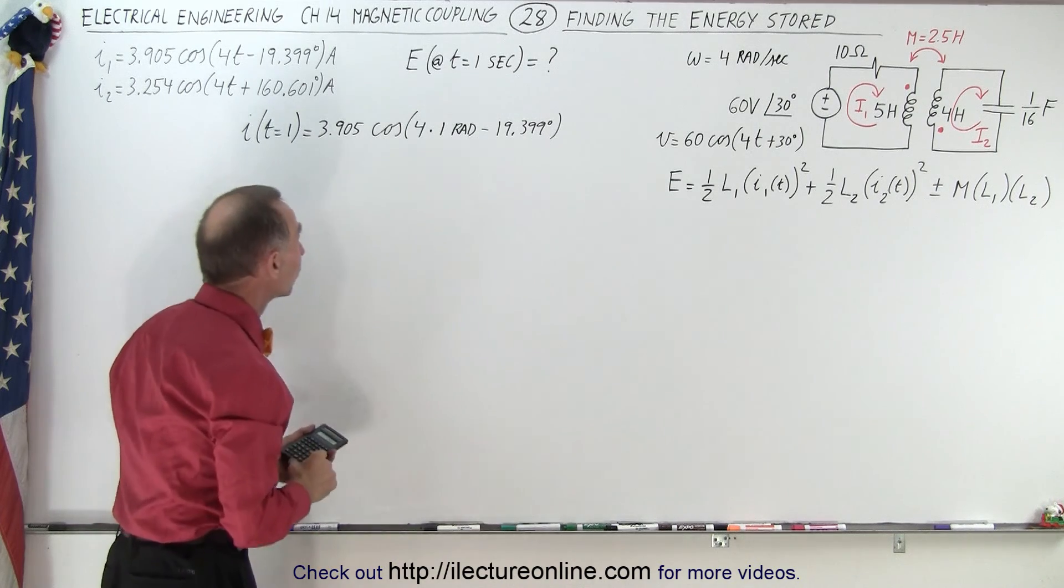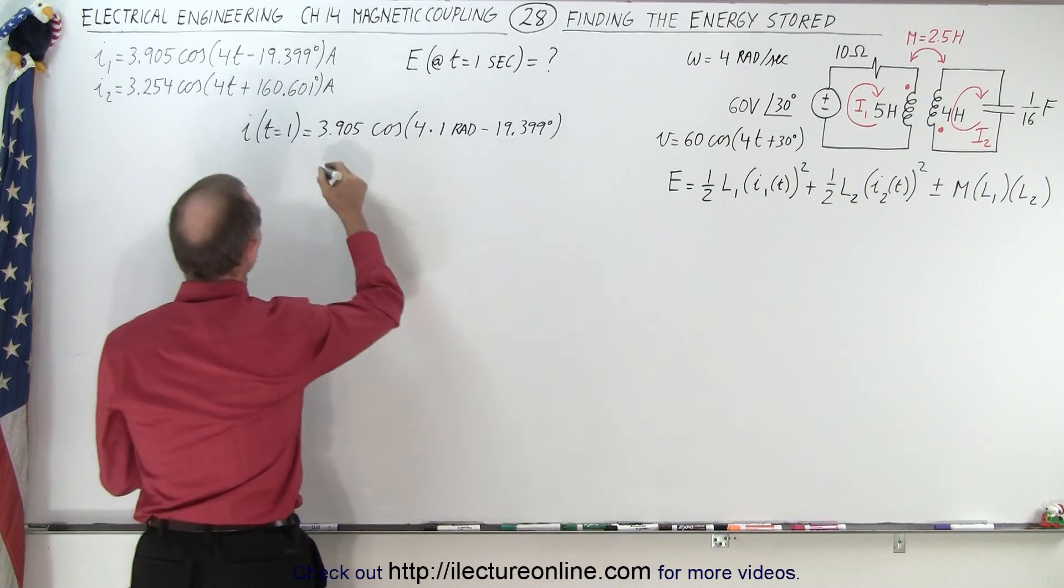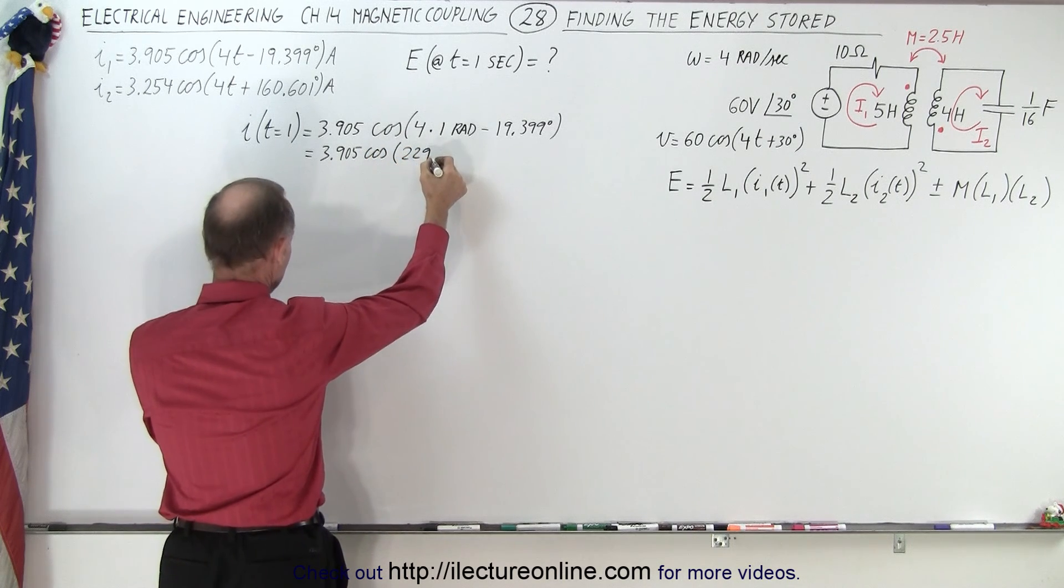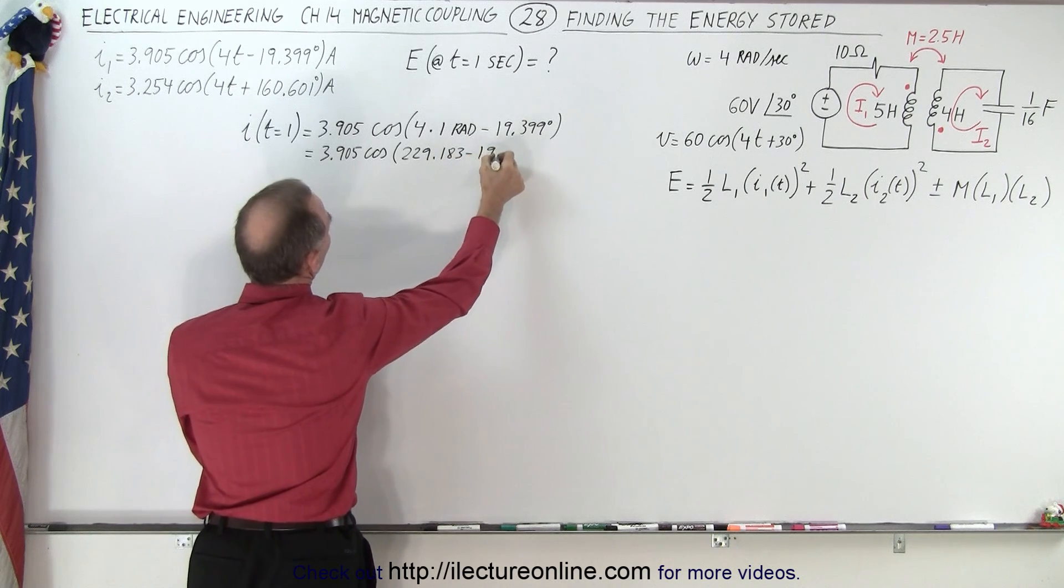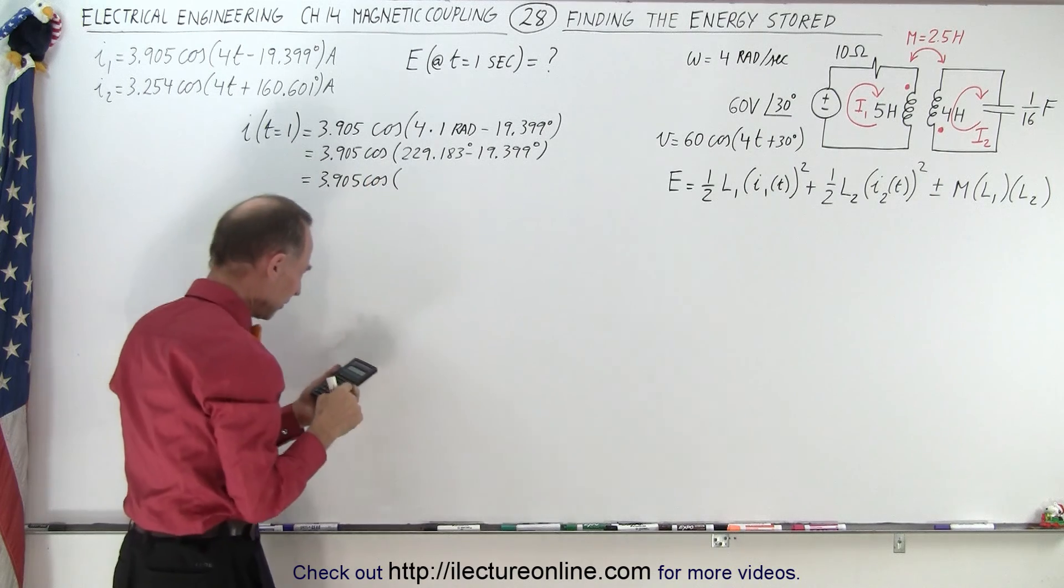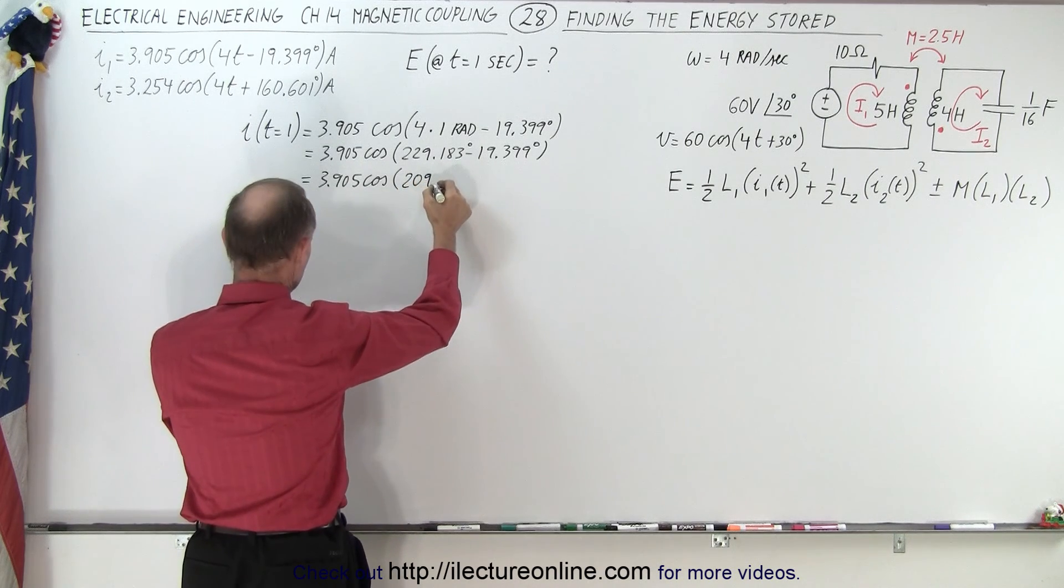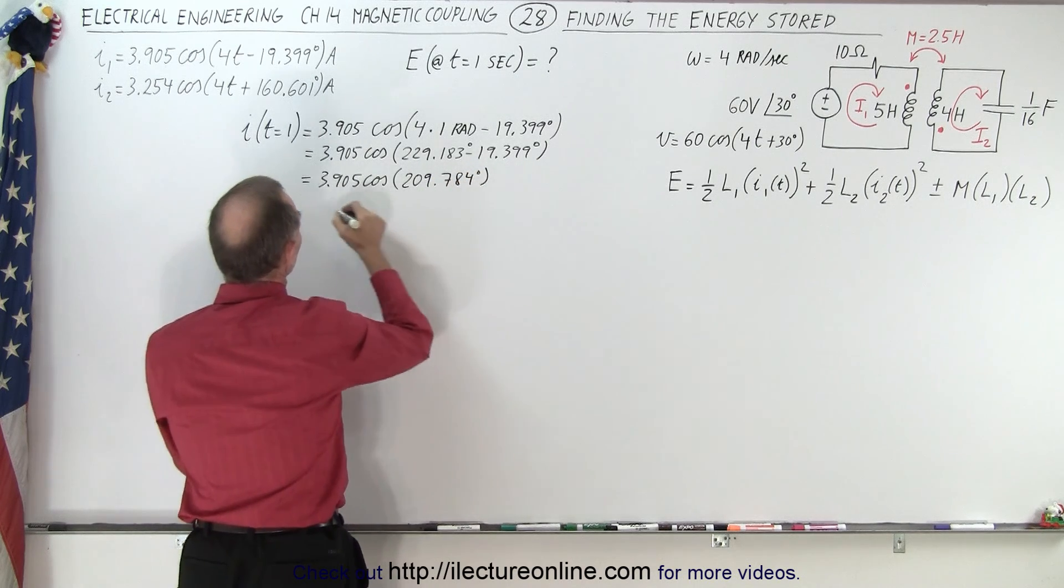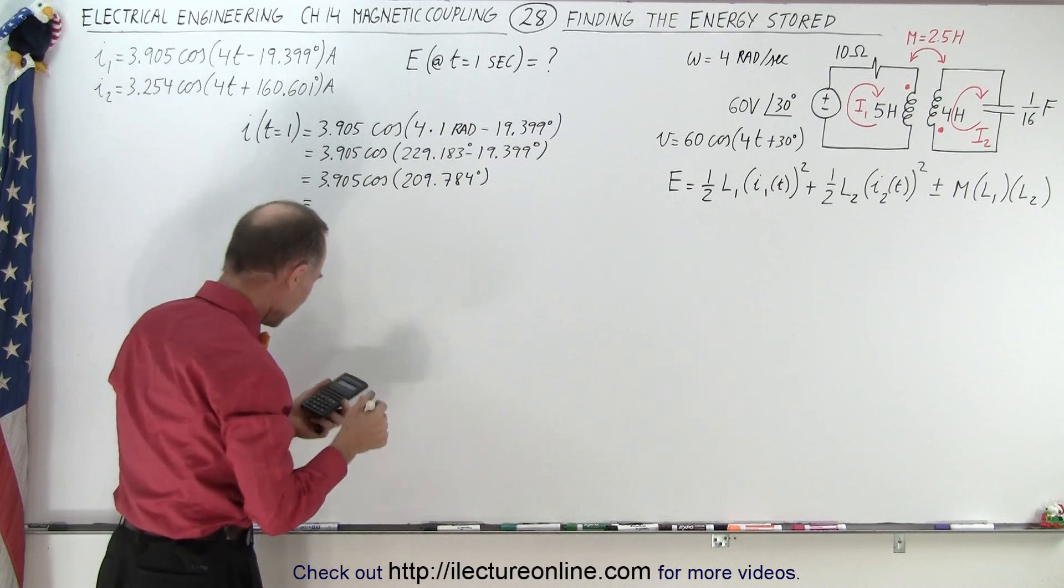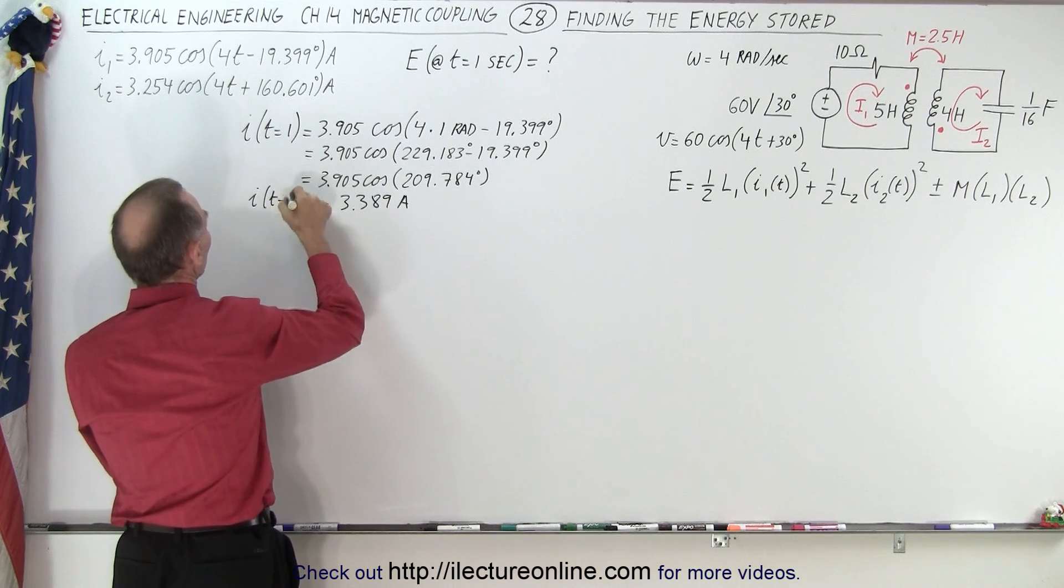First we have to convert radians to degrees. I have 4 times 180 divided by pi equals 229.183, so this becomes 3.905 times the cosine of 229.183 minus 19.399 degrees. This is equal to 3.905 times the cosine of 209.74 degrees, which gives me minus 3.389 amps. That is the current when time equals one second for I1.